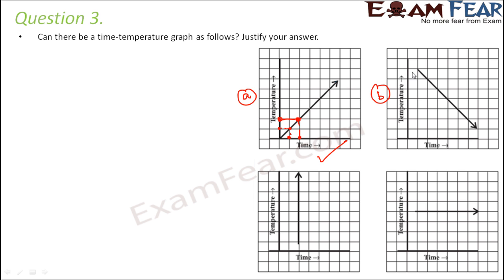Graph B shows that as time increases, temperature decreases. When time was at a certain point, temperature was higher, and as time increased, temperature decreased. So with an increase in time there is a decrease in temperature — this is also possible.